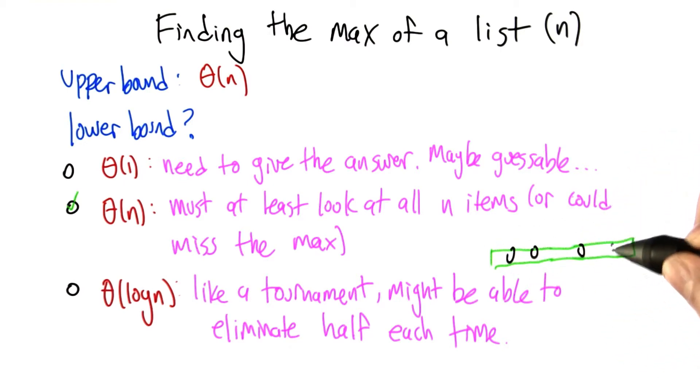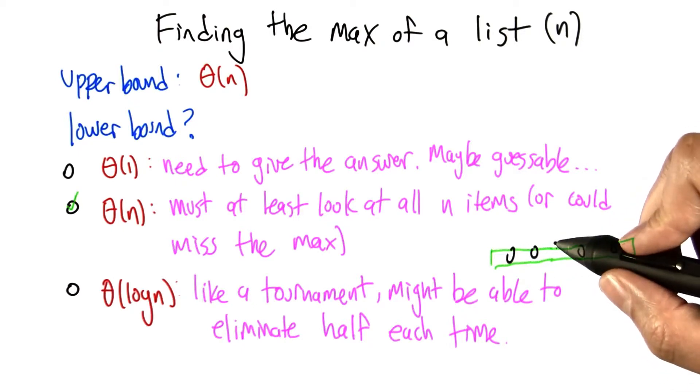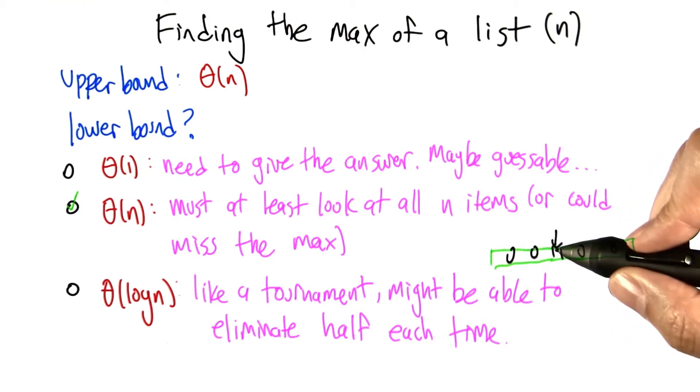So whatever that algorithm has done, let's say it's looked at a couple different elements of the list and it has a guess as to what the max is. We can make sure that this is always wrong by hiding a value in one of the spots in the list that the algorithm didn't check. And if that number is bigger than everybody else, it can't have answered the question correctly without looking at it.